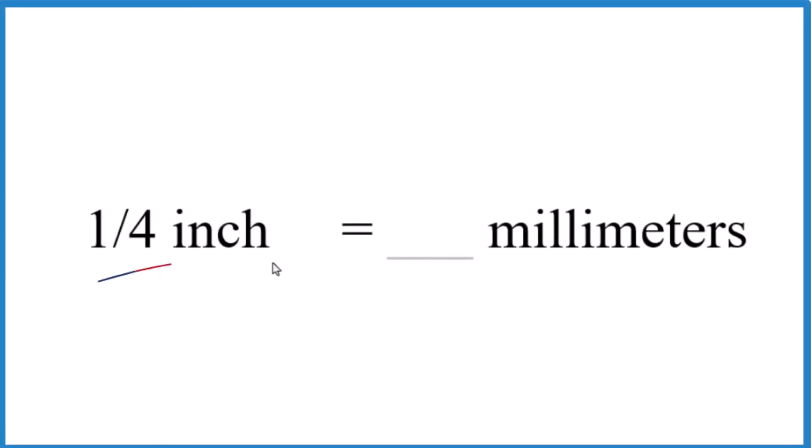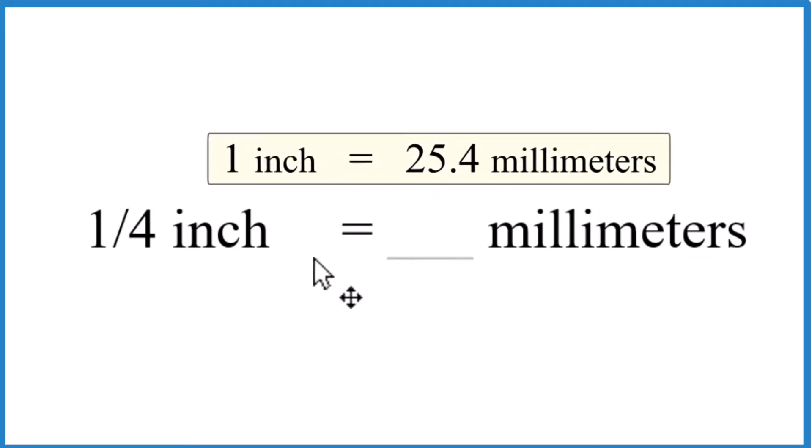Let's convert one-fourth inch to millimeters. So how many millimeters are in one-fourth inch? What you need to know to do this is that one inch is equal to 25.4 millimeters.